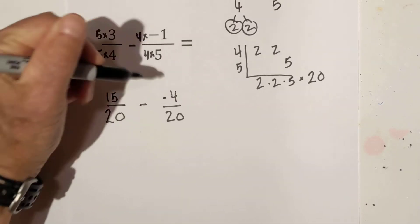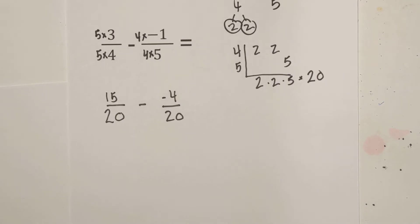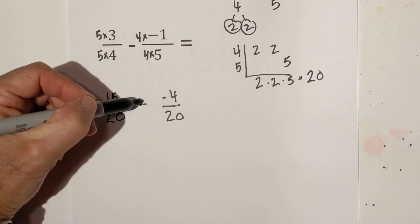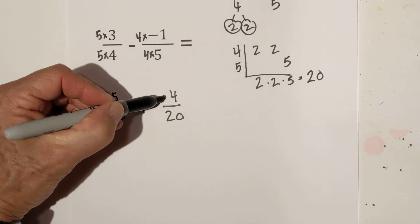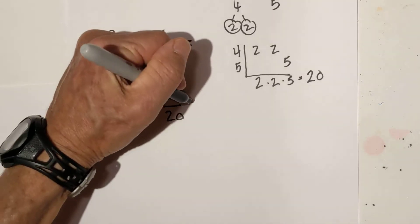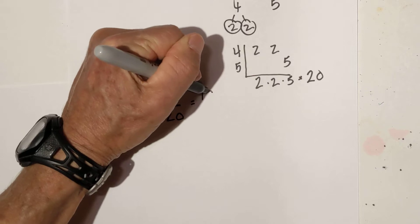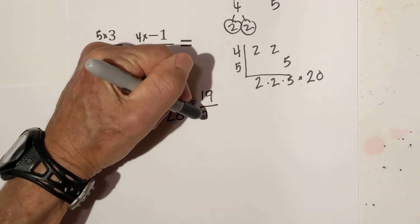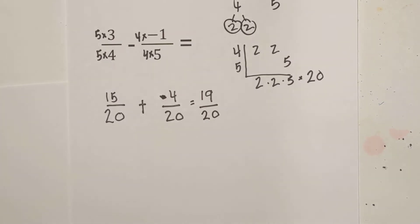5 times 5 times 3 is 15 and then 4 times a negative 1 is negative 4. Now let's remember our signs. Since we have minus a negative it is just like addition. So I am going to get rid of that. So now 15 plus 4 equals 19 and you keep the denominator the same.